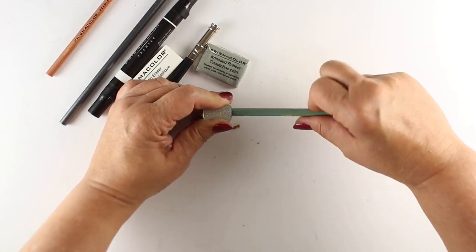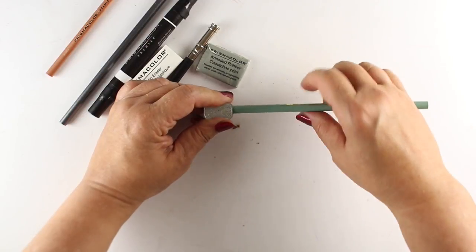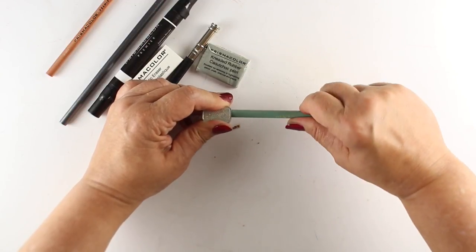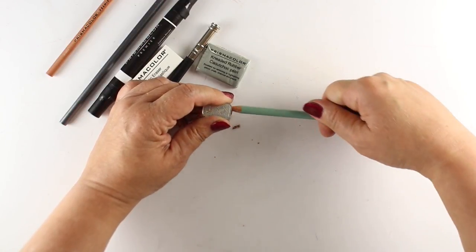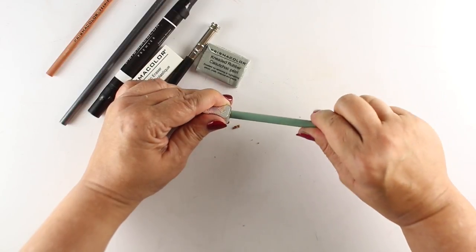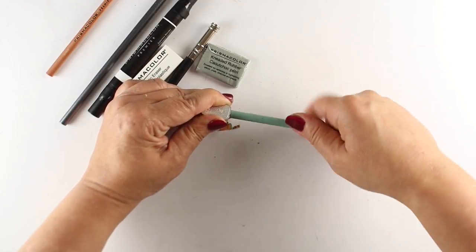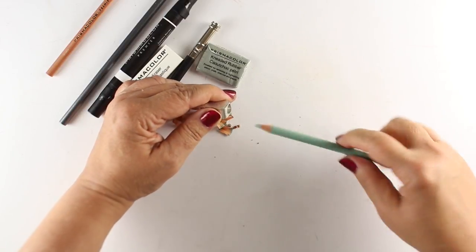If you want to turn the sharpener and hold the pencil still, that's great, but if you start wiggling around a lot, you're going to break the lead. Be very careful with that. This is from a brand new pencil, so it's taking me a little time to get it sharpened.